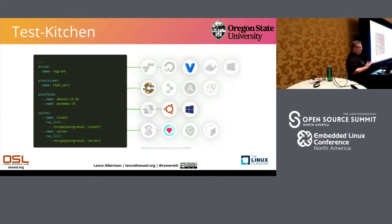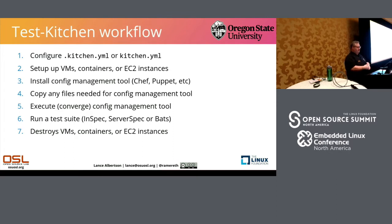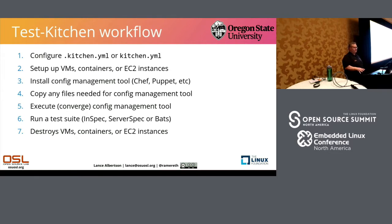Test Kitchen is YAML-driven and works on a variety of platforms. I'll be showing Vagrant here, but there are other drivers available. It also works with Windows. The basic workflow is that you configure it in the YAML file — originally `.kitchen.yml`, now just `kitchen.yml`. You can set up VMs, containers, or EC2 instances using various drivers. After spinning up the VM, it installs the configuration management tool, copies any necessary files to that node, then executes and converges that config management tool to the desired state. After that, it runs the test suite. InSpec is what I'm talking about today, but it also has support for ServerSpec and BATS. If the tests pass, it destroys the VM, container, or EC2 instances and you're done.